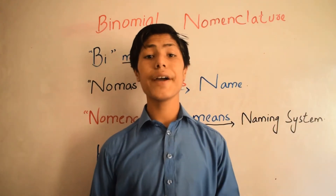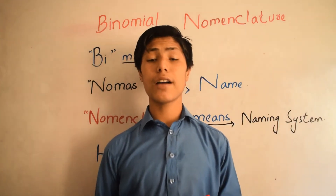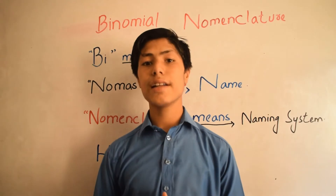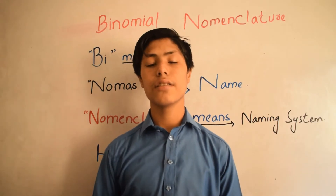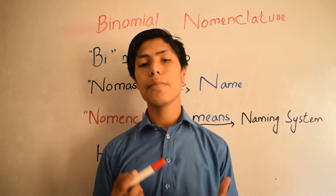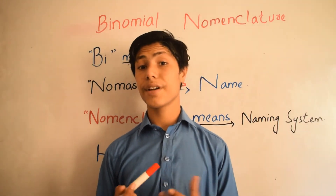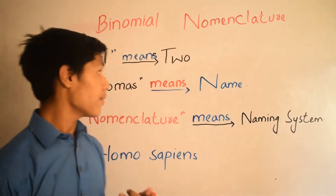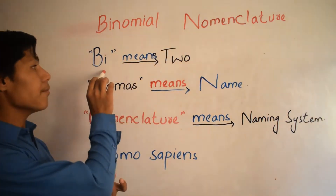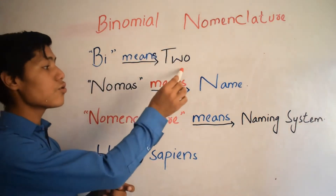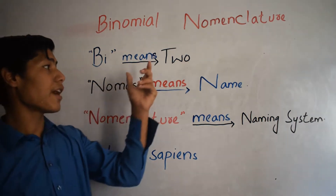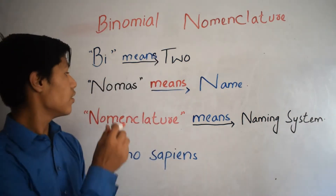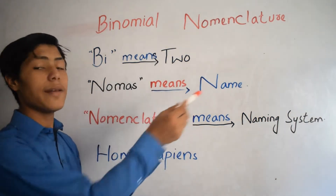In this video I am going to talk about binomial nomenclature. Binomial nomenclature — it can be clear from its name that bi means two, and noms mean name.